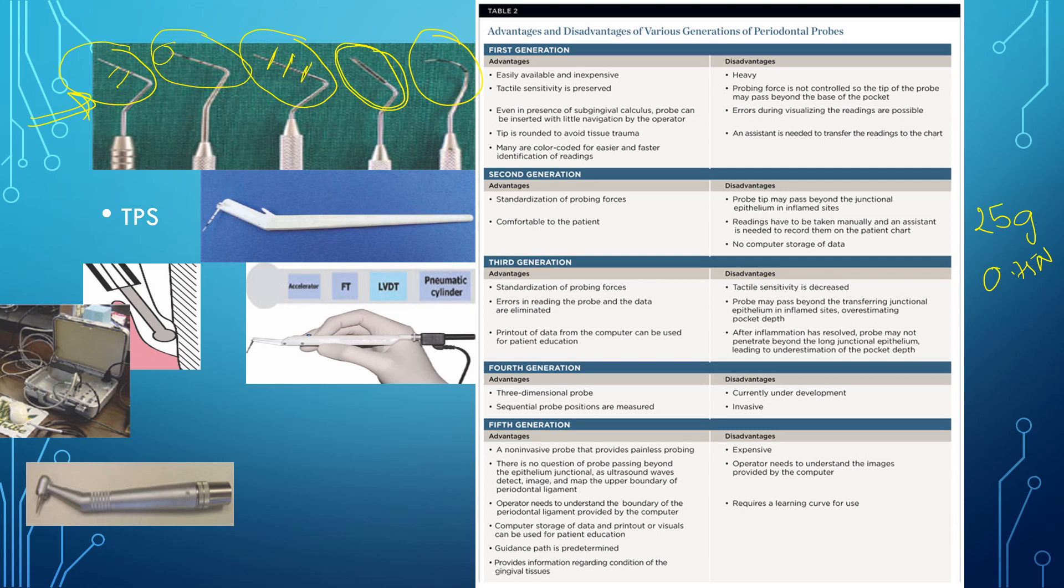Now when we see the second generation probe which is shown over here, they are the true pressure sensitive probes. They are called true pressure sensitive because there is a specific standardization of the probing forces which has been done for these probes. They are 20 grams which are calibrated in the system. The disadvantage is that the probe tip may pass beyond the junctional epithelium in case of inflamed sites, and also there is no computer storage of data in the second generation probes.